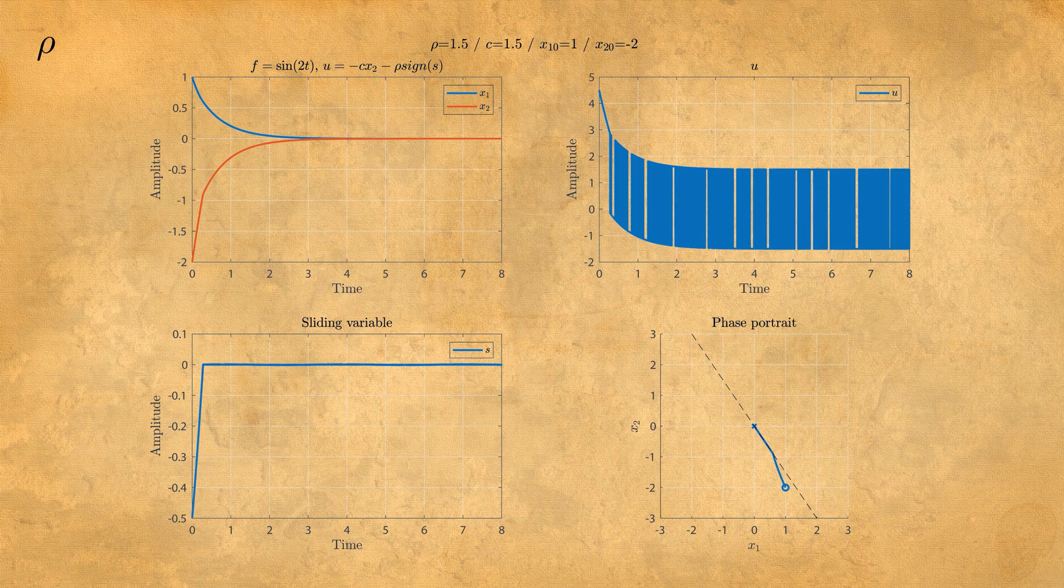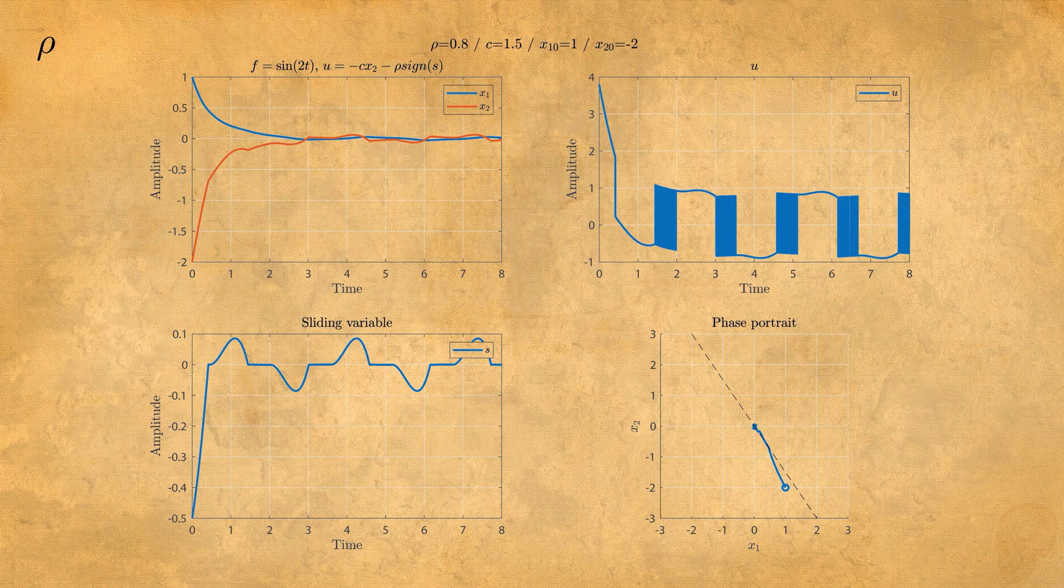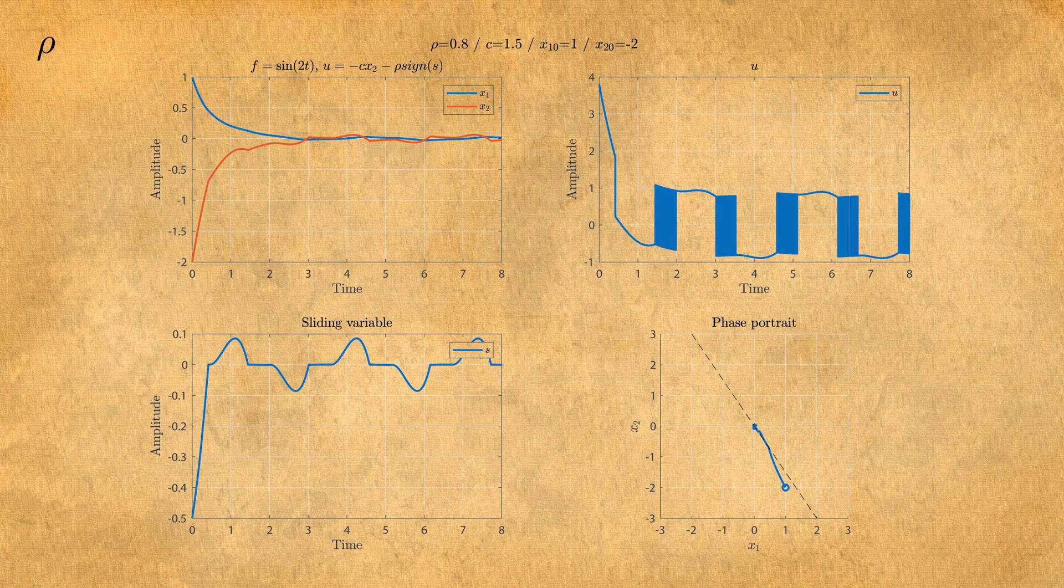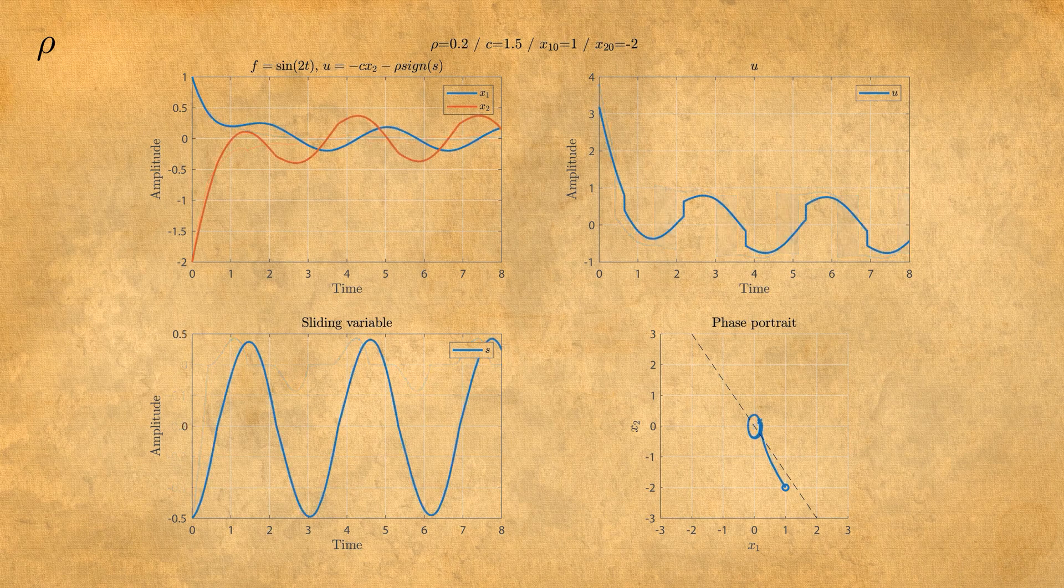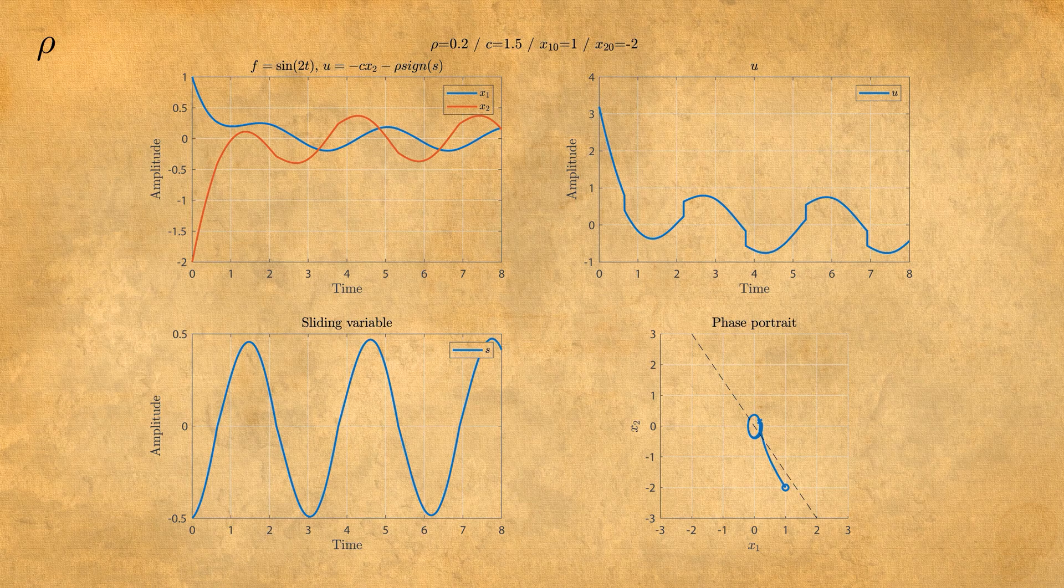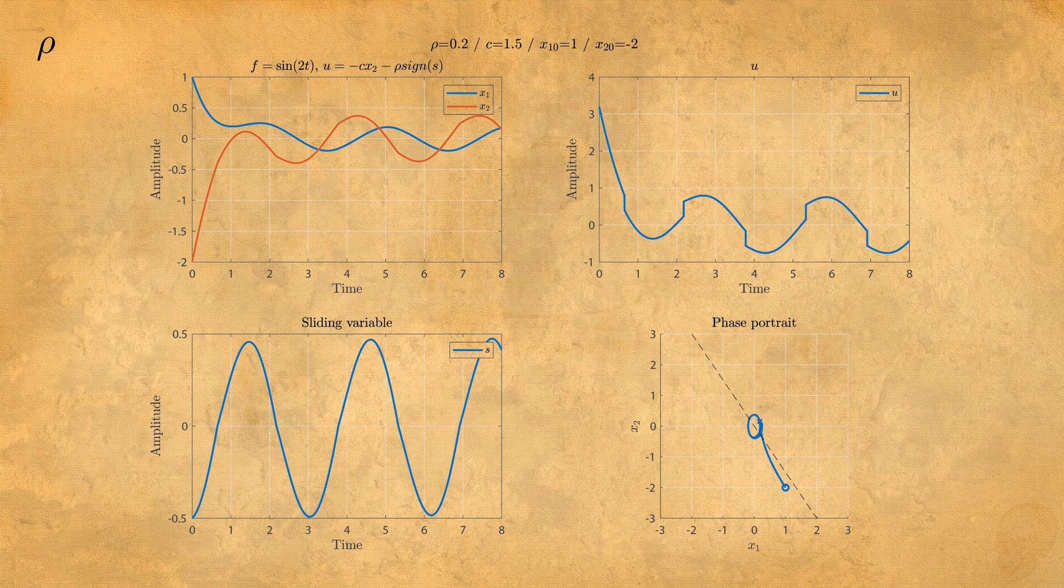If we change RAW to 0.8, we see that the system is not very stable. It oscillates between the two states X1 and X2, they oscillate around zero. If it goes very small, it oscillates for sure, so it's not stable. However, there's no chattering with this RAW.